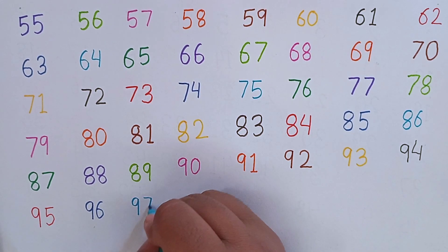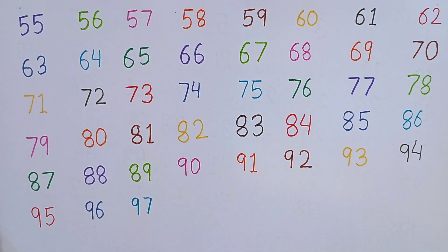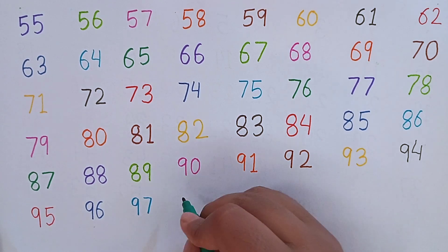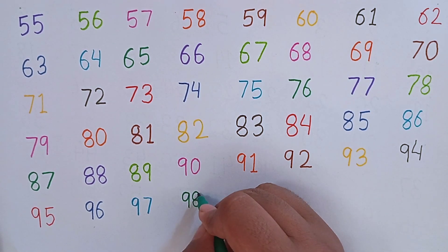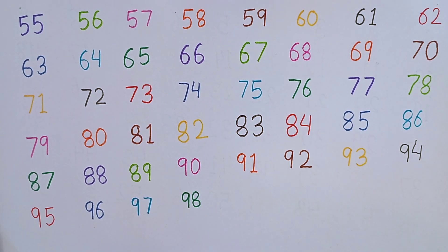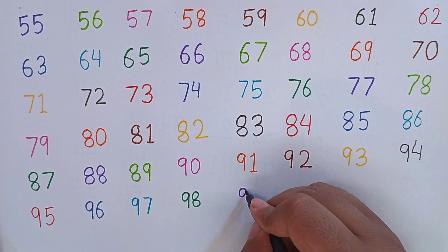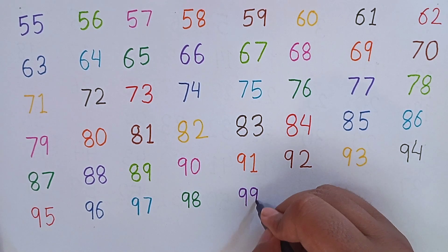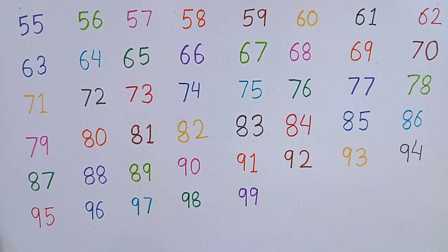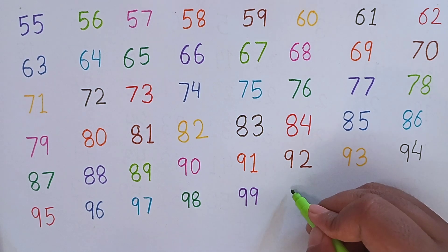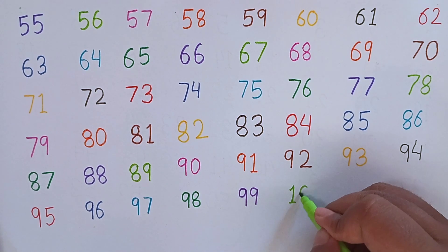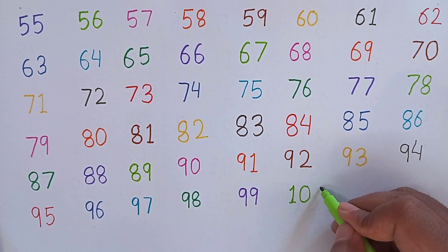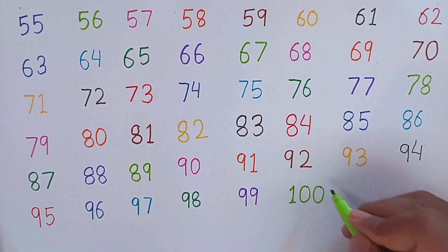Now I will write 97. This is 97. Again, repeat with me: 95, 96, 97. Now I am writing 98. 9, 8 — 98. The next number will be 99. 9, 9 — 99. This is 99. After 99, I am going to write 100. 1, 0, 0 — 100. This is 100.